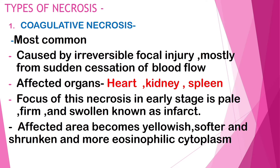The first type of necrosis is coagulative necrosis. This necrosis is very common and is basically caused by irreversible focal injury, mostly from sudden cessation of blood flow. The affected organs are heart, spleen, and kidney. The focus of this necrosis in the early stage is pale, firm, and swollen — known as infarct. The affected area becomes yellowish, softer, shrunk, and more eosinophilic cytoplasm is present.